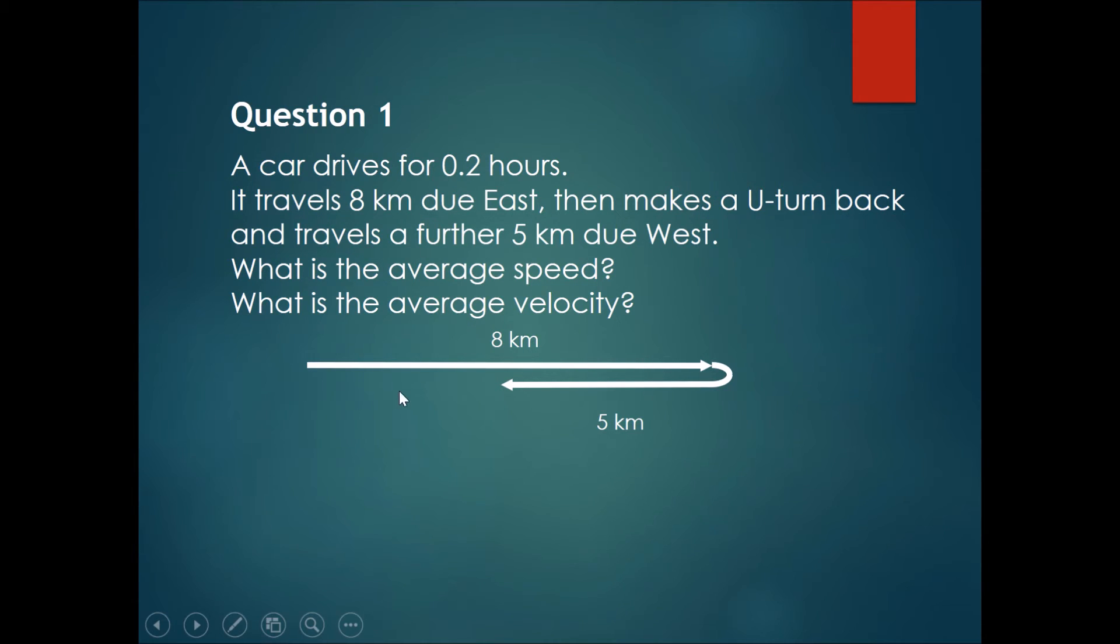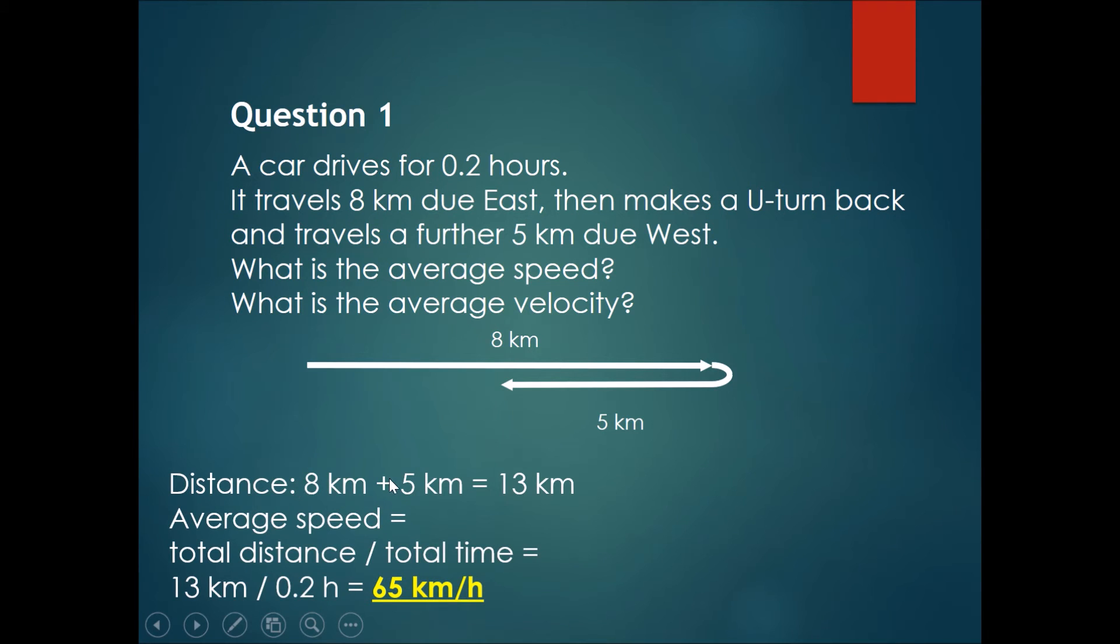Okay, now here are the answers. Distance would be 8 km plus 5 km, which is 13 km, so the average speed will be total distance, which is 13, divided by total time, which is 0.2 hours, which brings us to 65 km per hour. That sounds like a normal speed for a car, right?